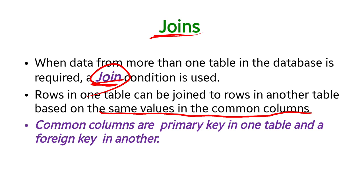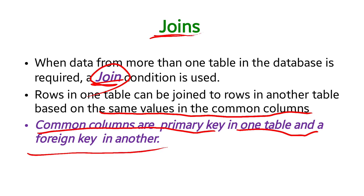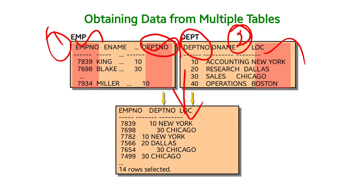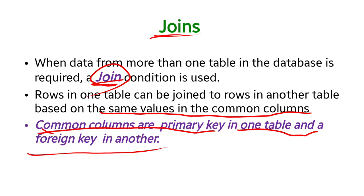What is meant by joins: when data from more than one table is required, a join condition is used. Rows in one table can be joined to rows in another table based on the same values in the common columns. Common columns typically mean a primary key in one table and a foreign key in another. In the example, the department number is the foreign key in the employee table and the primary key in the department table.